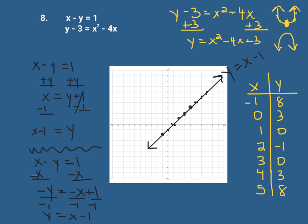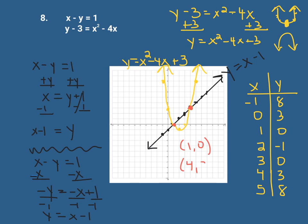I connected the points as best I could. Make sure you put arrows to show it keeps going, and label your equation — I like to label it in the form y equals. To answer the question, we're looking for the points of intersection: our first point is at (1, 0) and our second point is at (4, 3). These are the same answers we got algebraically.